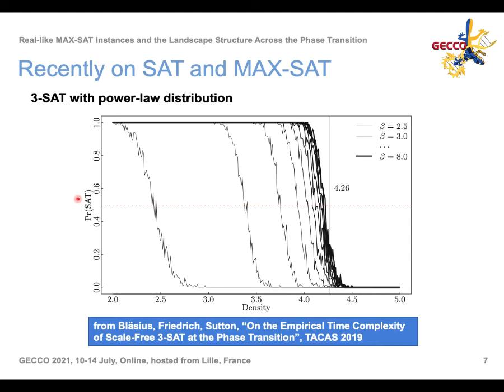Blasius and co-authors recently analyzed the probability of an instance being satisfiable using 3SAT instances with a power-law distribution for the degrees of nodes. They found that the phase transition changes with beta — that is, the threshold for the clause-to-variable ratio alpha increases as beta increases, going from approximately 2.4 to 4.2. As beta tends to infinity, we recover the uniform random instances and this threshold reaches 4.26.